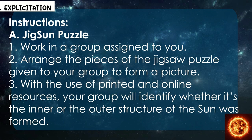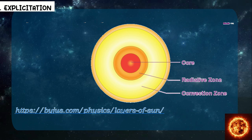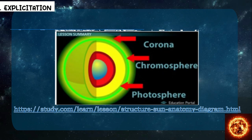Instructions — Jigsaw Puzzle: work in a group assigned to you. Arrange the pieces of the jigsaw puzzle given to your group to form a picture. With the use of printed and online resources, your group will identify whether it's the inner or the outer structure of the sun that was formed. Here is an illustration showing the sun's core, the radiative zone, and the convection zone — as well as the corona, the chromosphere, and the photosphere.